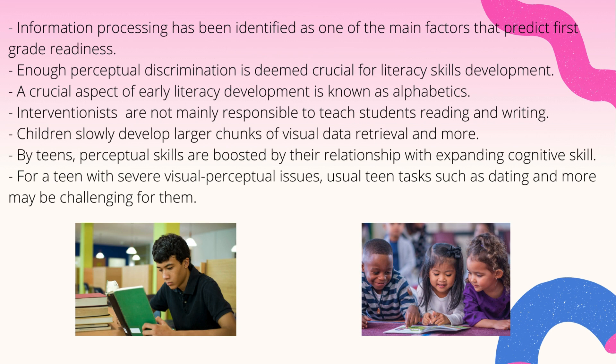Information processing has been identified as one of the main factors that predict first-grade readiness, particularly in the visual perception motor domain. There is also evidence that a school-going child with delayed perceptual progress may not catch up with peers in academic achievement. Adequate perceptual discrimination is deemed crucial for the literacy skills of reading and writing.